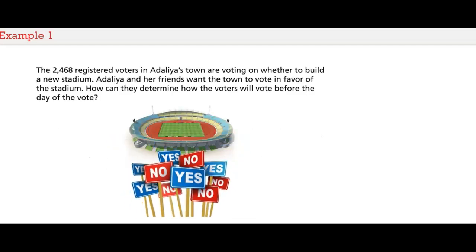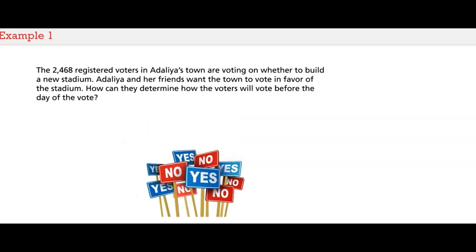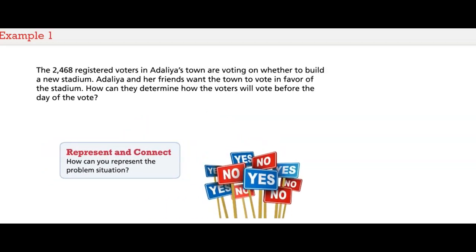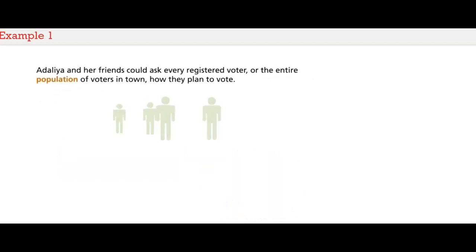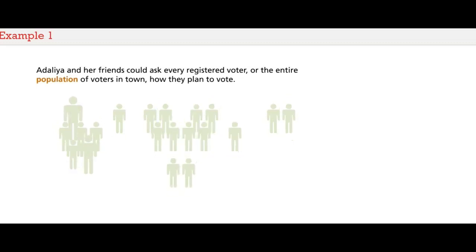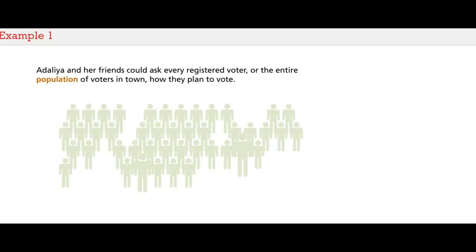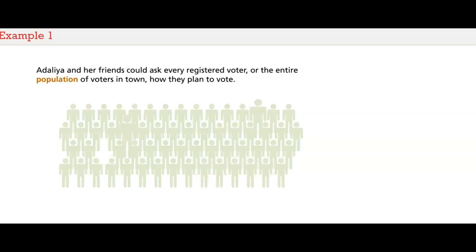The 2,468 registered voters in Adalia's town are voting on whether to build a new stadium. Adalia and her friends want the town to vote in favor of the stadium. How can they determine how the voters will vote before the day of the vote? Adalia and her friends could ask every registered voter — the entire population of voters in town — how they plan to vote.